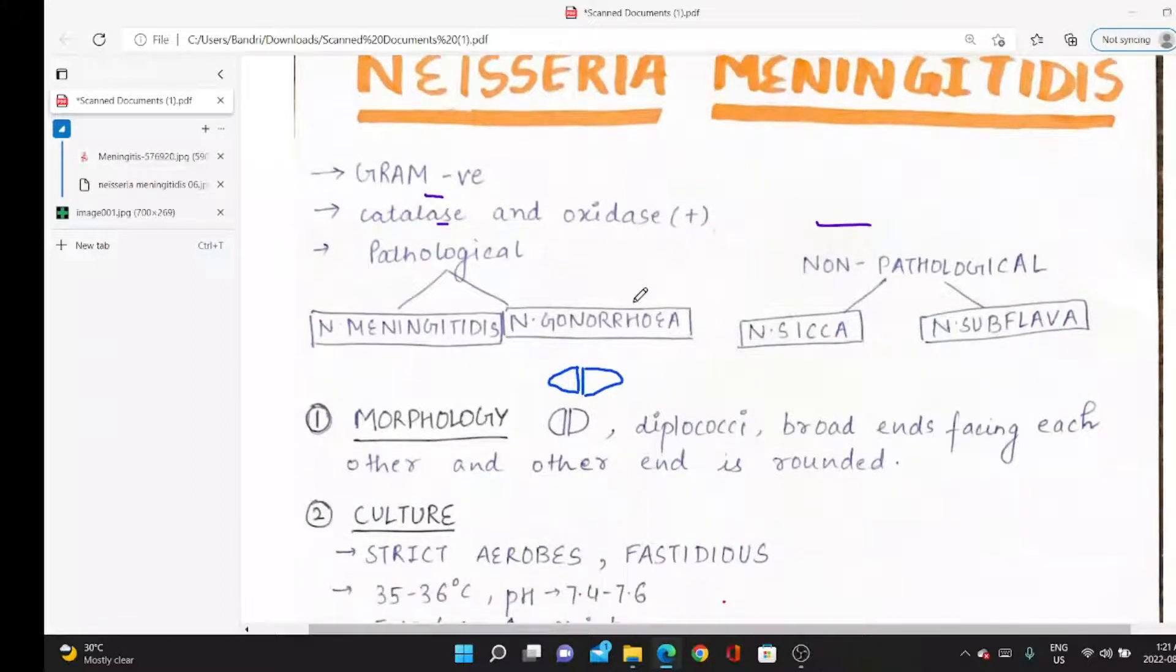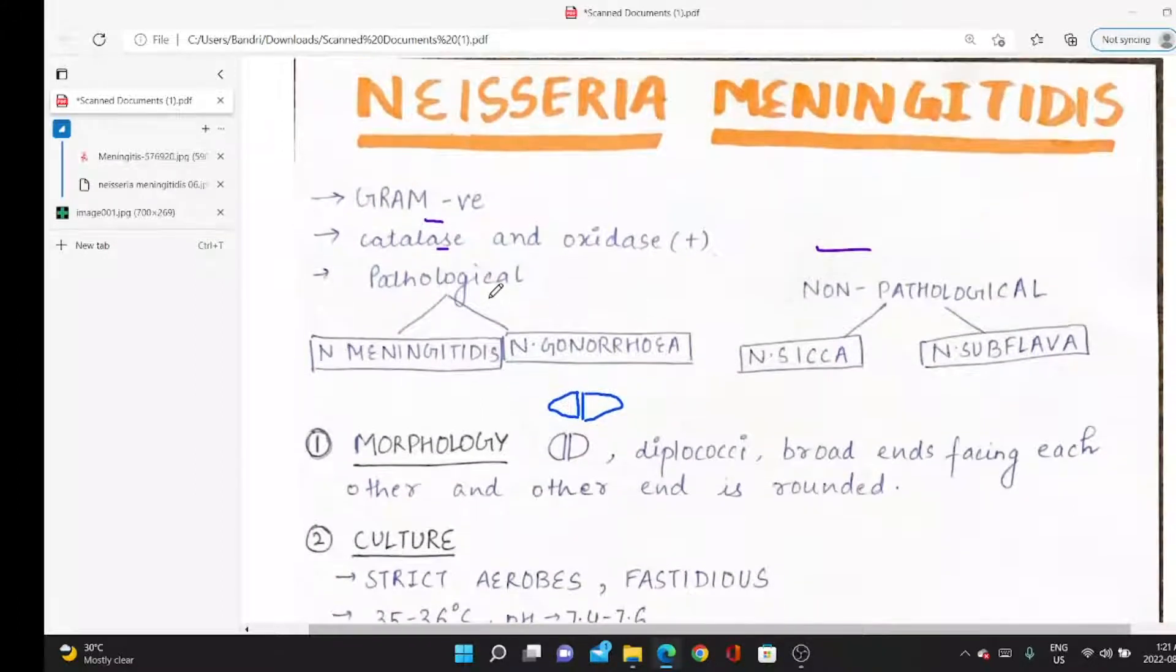We have pathological and non-pathological strains. Pathological causes disease, non-pathological does not cause disease unless the person is immunocompromised—meaning their immune system is weakened.